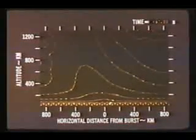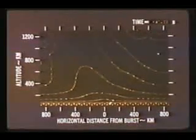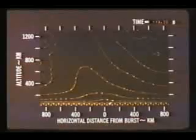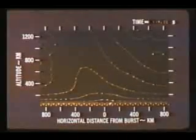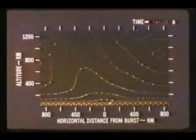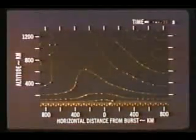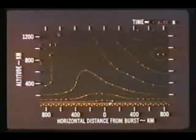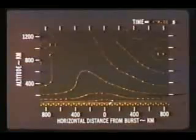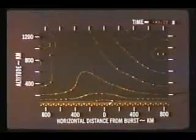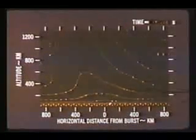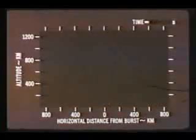A second burst in the same region would be detonated in an atmosphere altered from its normal state. The effects observed from the second explosion would therefore depend on the location, yield, and time of the first explosion.